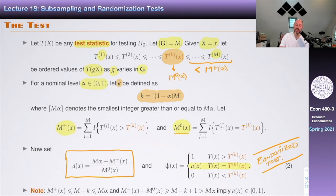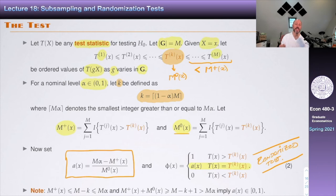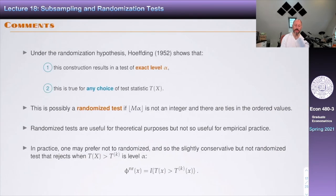Hoeffding, in a 1952 paper, showed that this construction gives a test that is exactly level alpha in finite samples, and this is true for any choice of test statistic. This is really powerful — randomized tests are useful for theoretical purposes but not empirical practice, because you don't want a test that sometimes rejects due to a coin flip so that results change each time you run the code. So we use the non-randomized version in practice.